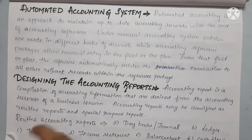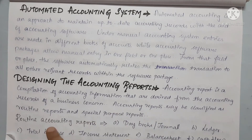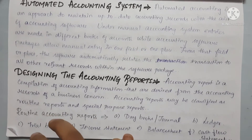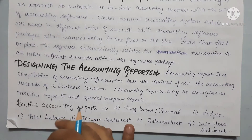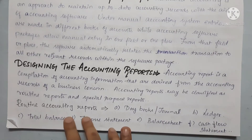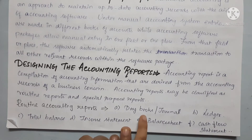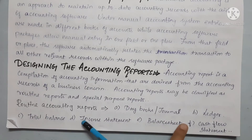Designing accounting reports — accounting reports are the compilation of accounting information derived from the accounting records of business concerns. Accounting reports may be classified as routine reports and special purpose reports. Routine reports include day books, journal, ledger, trial balance, income statement, balance sheet, and cash flow statement — these are everyday recorded reports.